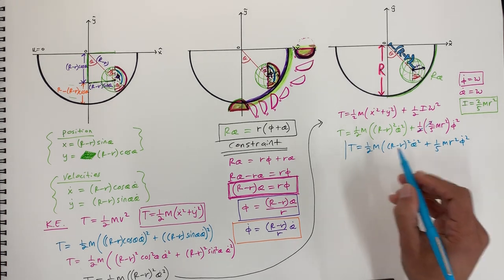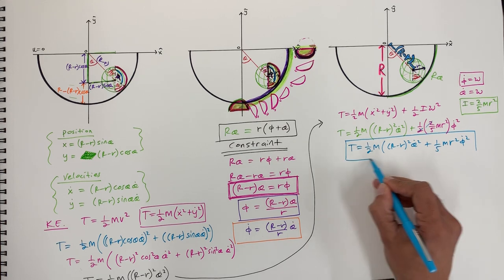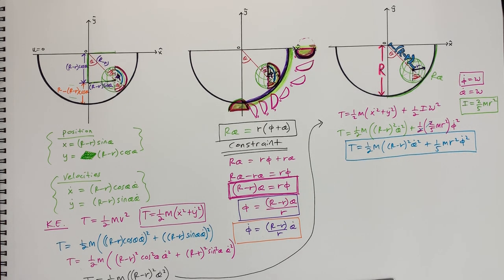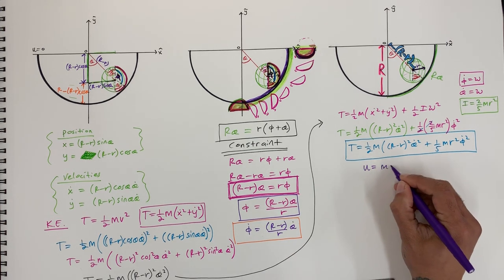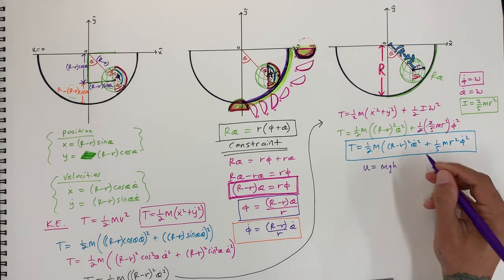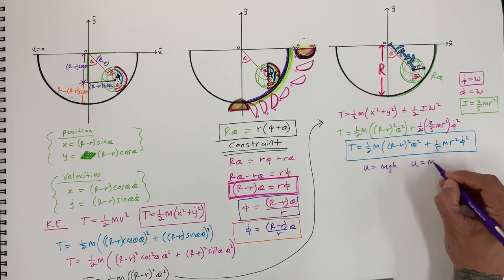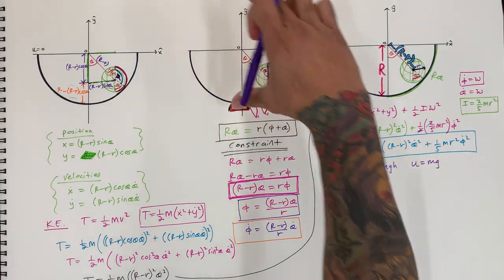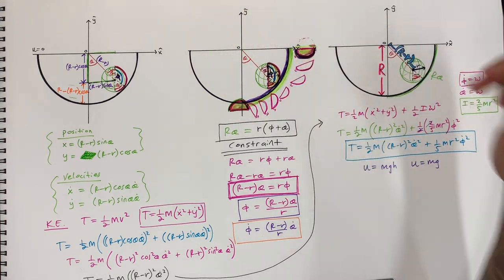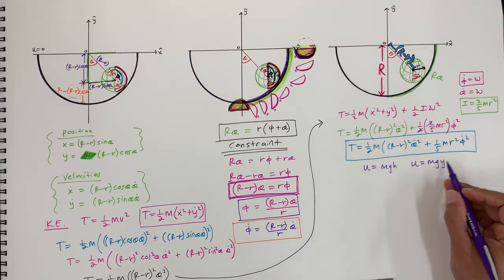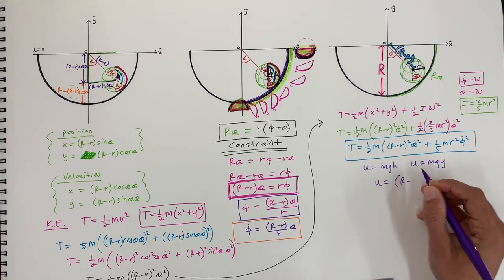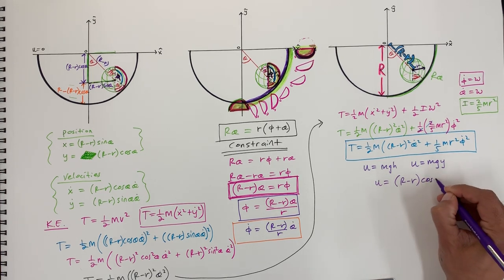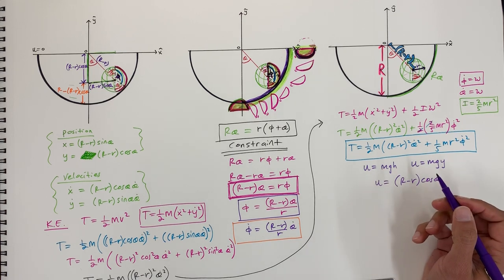Now for the potential energy: U equals m g times the height, and the height here is the y coordinate. So U equals m g times (big R minus little r) cosine theta. This potential represents the sphere at this distance from the system — that is the condition for this potential.